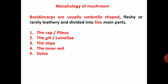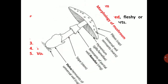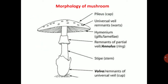Morphology of mushroom: basidiocarps are usually umbrella-shaped, fleshy or rarely leathery, divided into five main parts. First is the cap or pileus; second is the gill or lamella; third is the stipe; fourth is the inner veil; fifth is the volva. The pileus protects the progeny present on the under surface of the umbrella, where spores are produced.